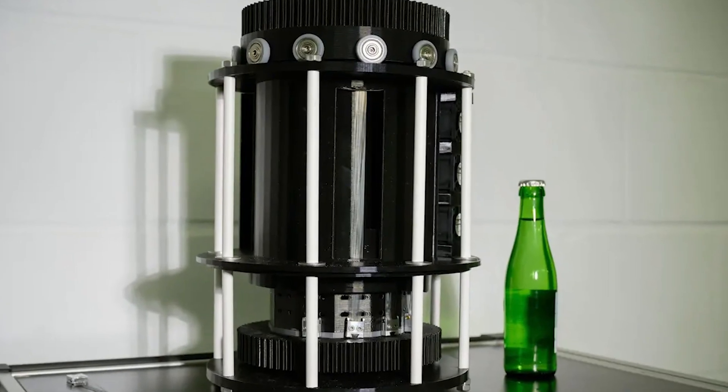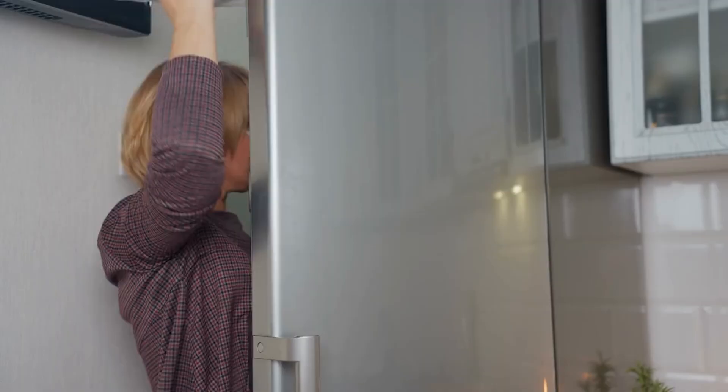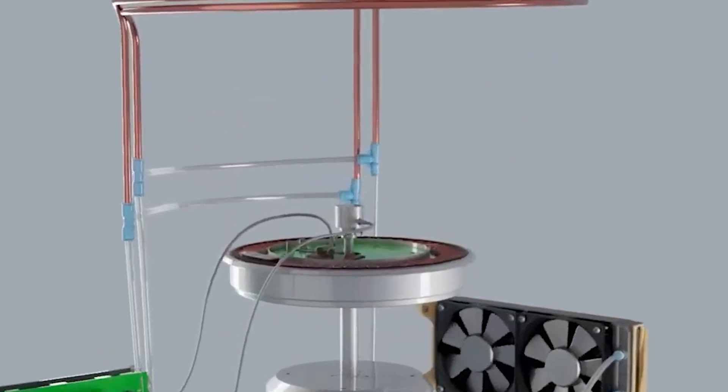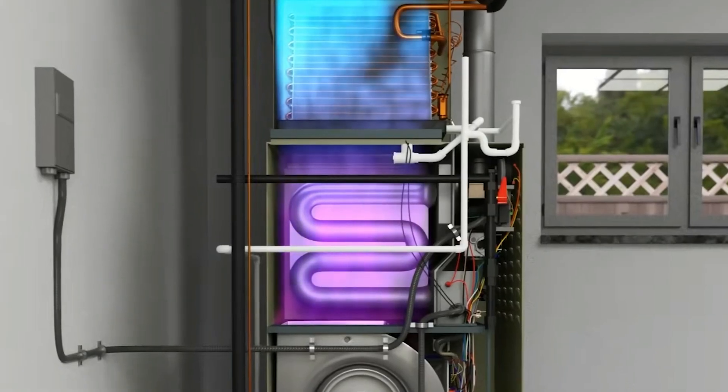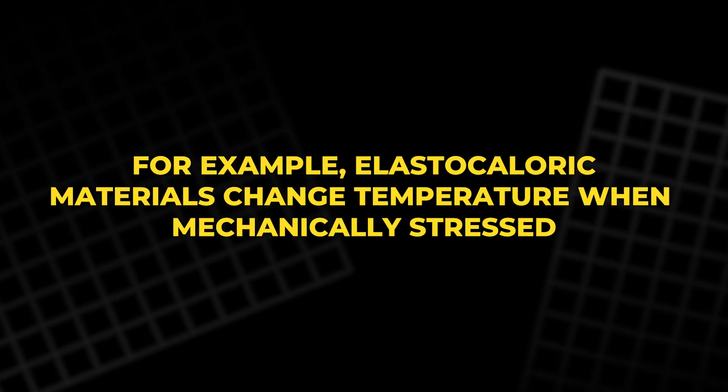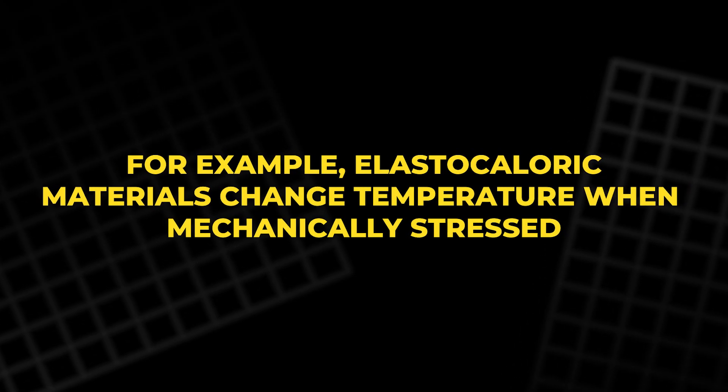Caloric cooling, unlike traditional systems, eliminates the need for refrigerants by using materials that change temperature when exposed to external forces. For example, elastocaloric materials change temperature when mechanically stressed,